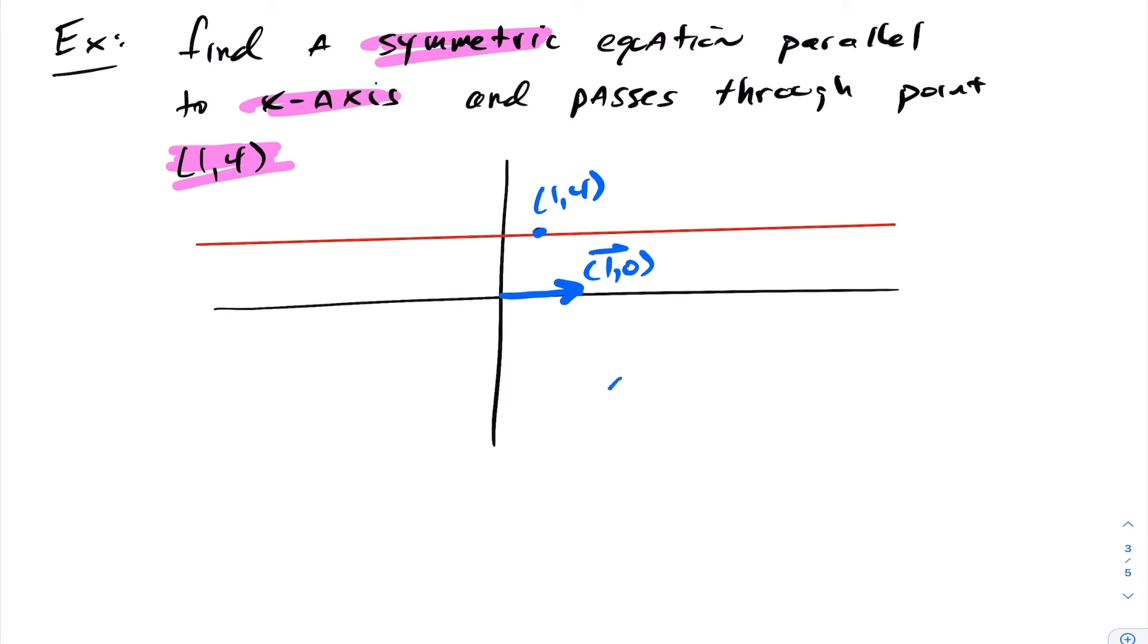So therefore I can use this direction vector for my x-axis. So the equation that I want to create has a direction vector of (1,0) and it has a point of (1,4). Therefore the parametric form of this equation would be x minus x naught over a must equal y minus y naught over b, where a and b are the coordinates of my direction vectors.